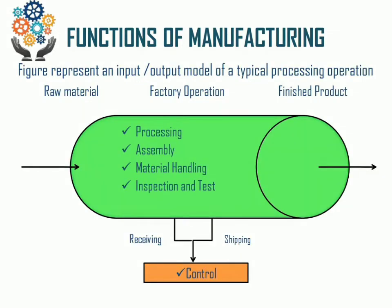The functions of manufacturing form a complete channel through which we input various resources like raw material, machines, manpower, time, and money. These resources go through factory operations such as processing, assembly, material handling, and inspection and testing, from which we get a finished product as the output of the manufacturing process.